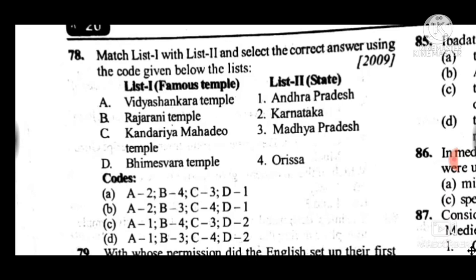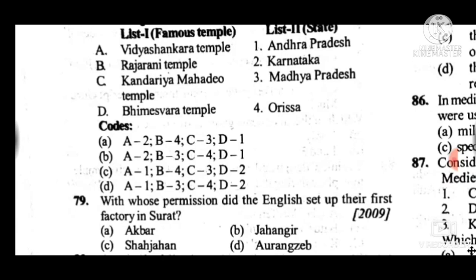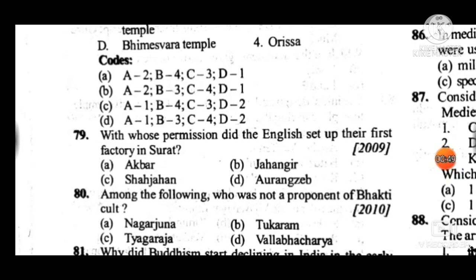Question 79: With whose permission did the English East India Company set up their first factory in Surat? Answer is B, Jahangir. Question 80: Among the following, who was not a proponent of the Bhakti cult? Answer is A, Nagarjuna.